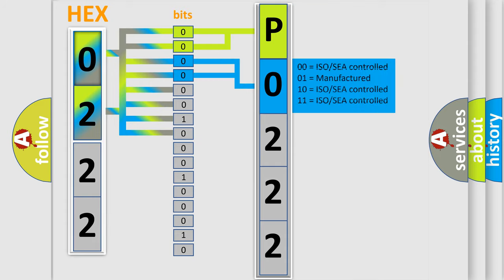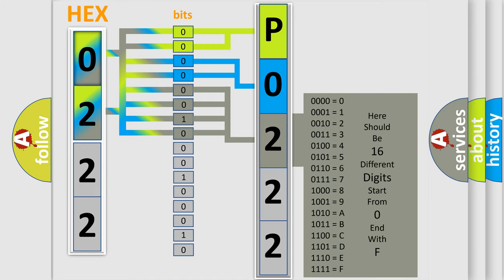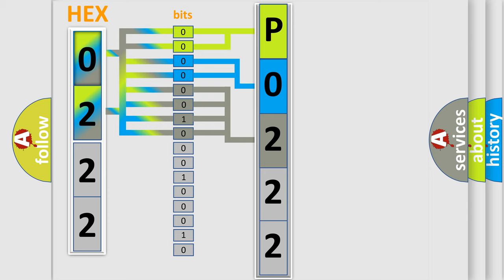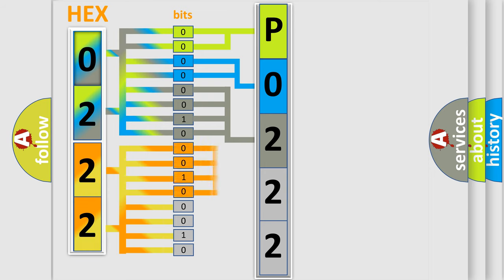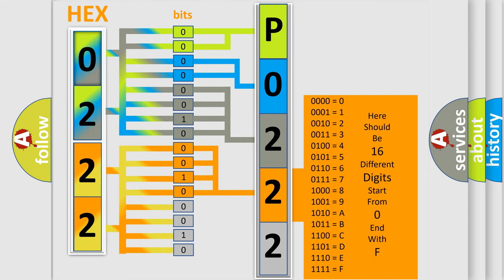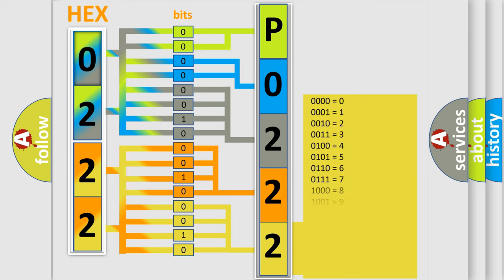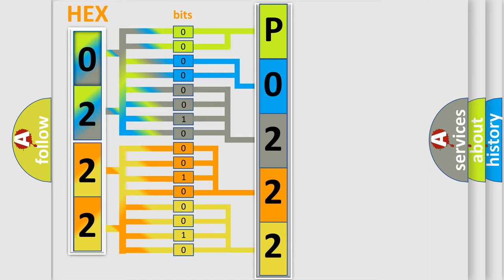The next two bits again determine the second character. The last bits of the first byte define the third character of the code. The second byte is composed of a combination of eight bits. The first four bits determine the fourth character of the code, and the combination of the last four bits defines the fifth character. A single byte conceals 256 possible combinations.